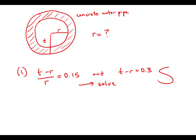Now forget statement number one — moving on to statement number two. Here we're told that the area of the concrete in the cross-section is 1.29π square feet. We want to know this area in geometry, which is something known as an annulus — a ring formed by a big circle minus a small circle. And that's actually the way we figure it out.